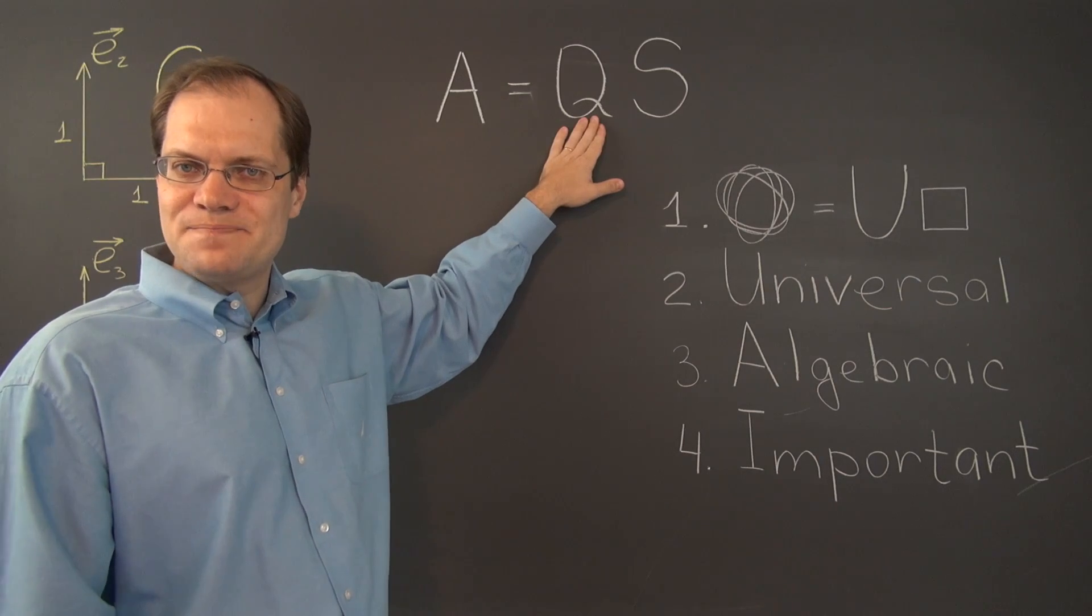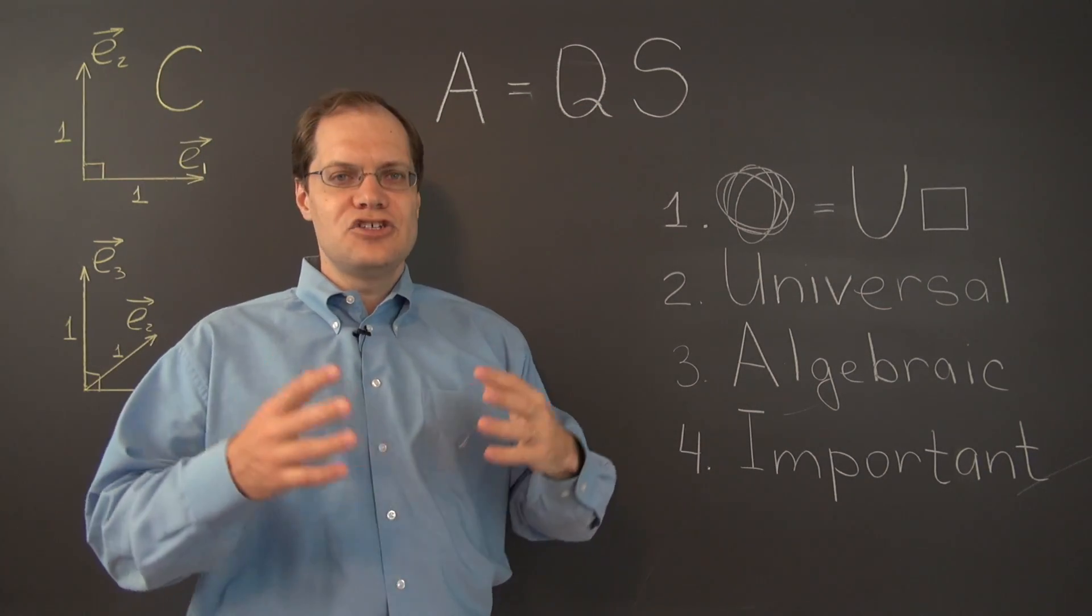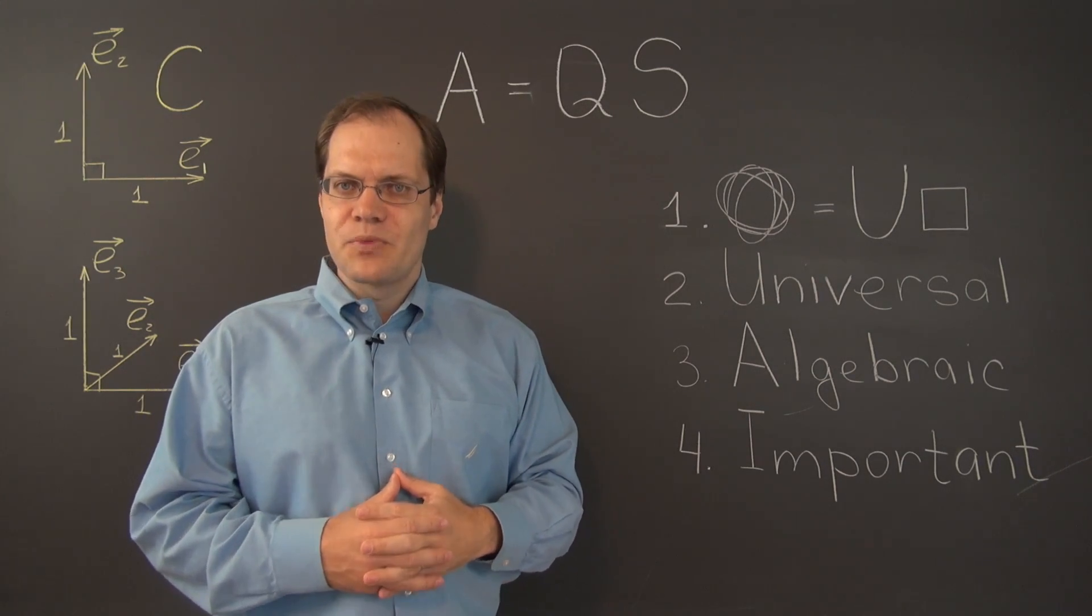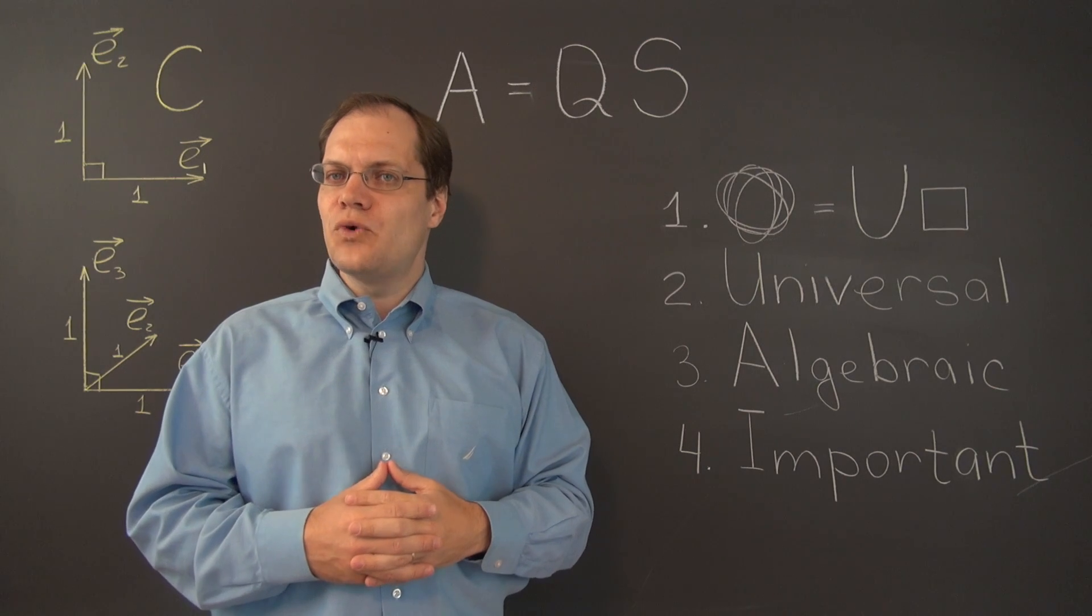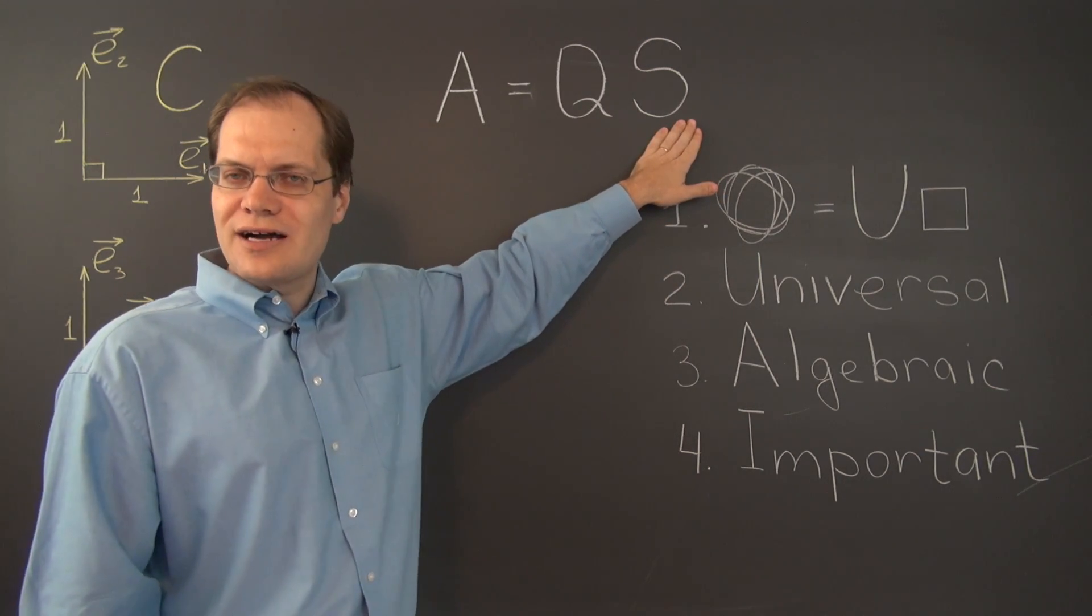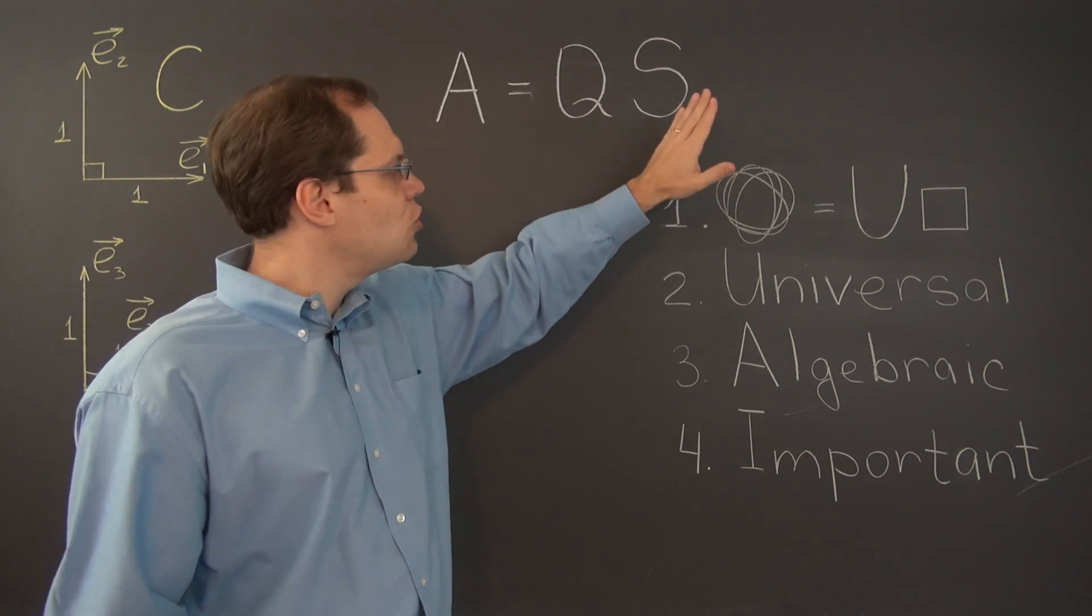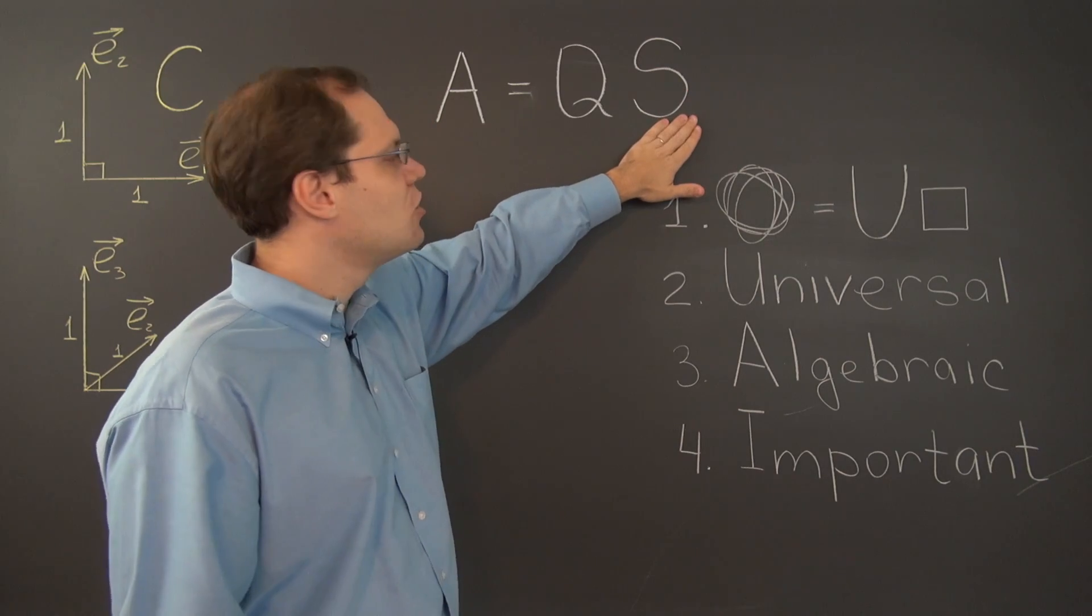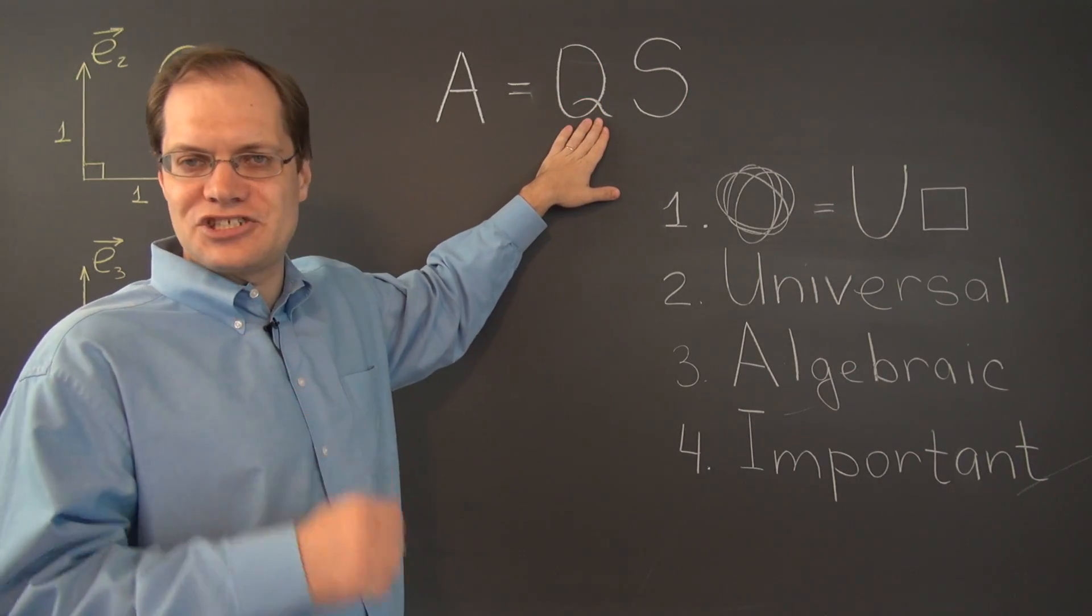Now of course this theorem has an unequivocal geometric interpretation. It states that any linear transformation whatsoever is a combination of scaling along orthogonal directions and only by non-negative amounts, so there's no flipping going on here, followed by a rotation with a possible reflection thrown in.